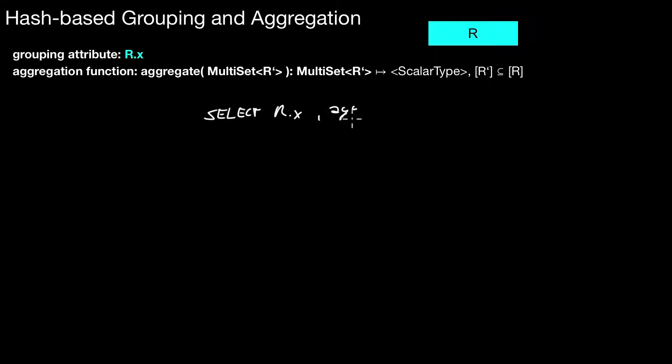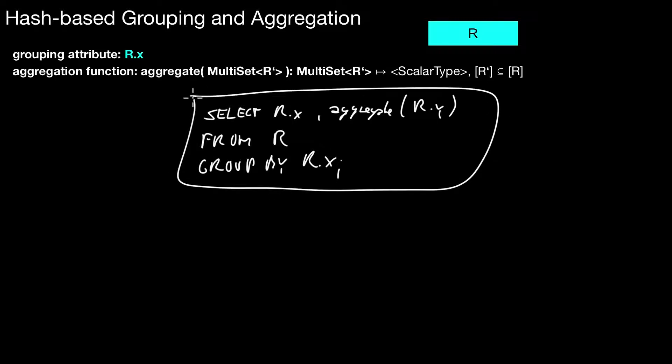And again here we typically specify a single attribute. So in SQL most aggregation functions are defined to take a single attribute here. But in theory it could also be multiple attributes. So a SQL statement could look like this: R.y FROM R GROUP BY R.x. This statement can be implemented with the algorithms I demonstrate in this video.